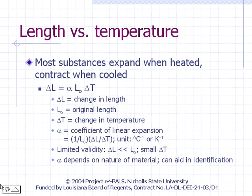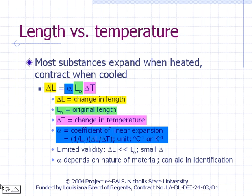Most substances expand when heated and contract when cooled. The extent to which the length of an object expands when heated is directly proportional to the original length, shown here as L₀, and the change in temperature, shown here as delta T. The proportionality constant is typically represented by the Greek letter alpha and is known as the coefficient of thermal expansion.